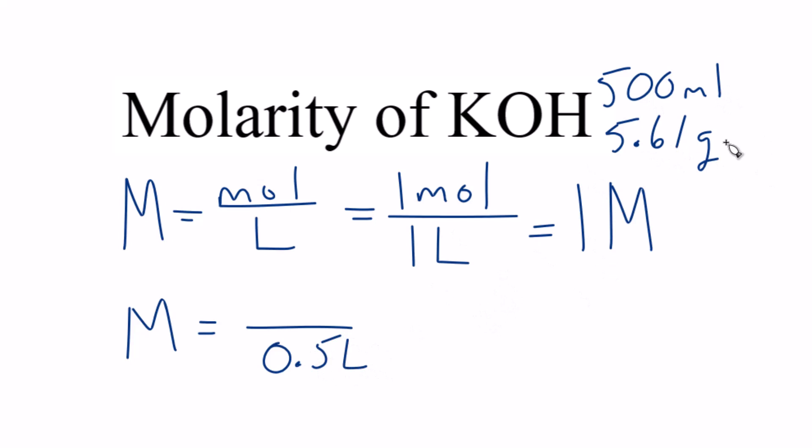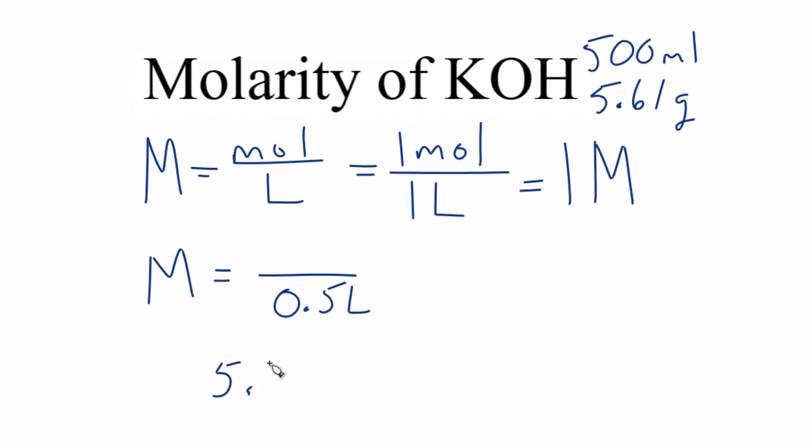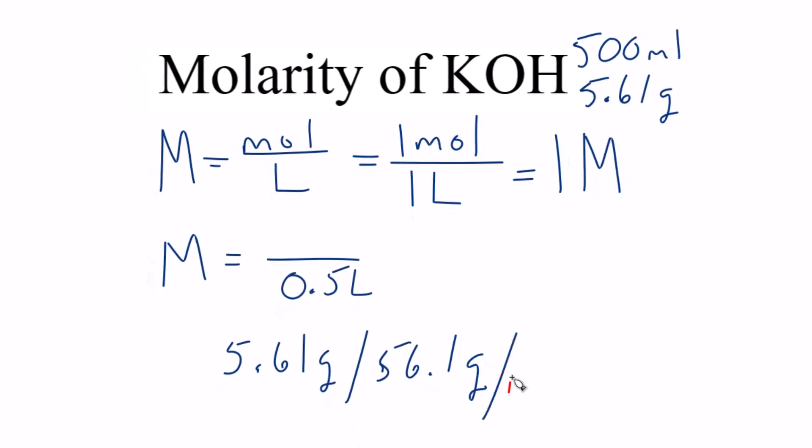So now to figure out the moles, the way you figure out moles is you take your grams, so we have 5.61 grams of KOH, and we divide that by the molar mass of KOH. The molar mass of KOH is 56.1 grams per mole. That's the units for molar mass.